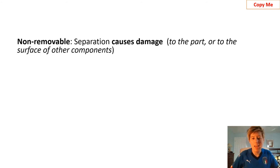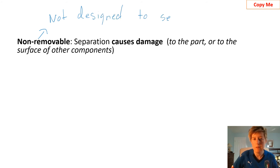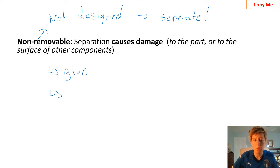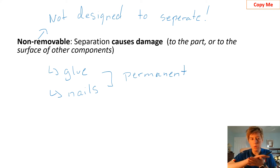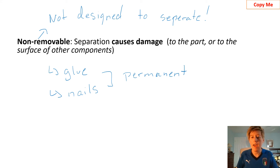Non-removable means that if you try to separate the parts, damage happens — because it is not designed to separate. An example would be anything using glue or nails; those are designed to be permanent. Going back to the earlier animation of two pieces of wood stuck together by glue: that would be a non-removable link, used because I did not want to separate those two components. If you try to separate them, damage is going to happen.